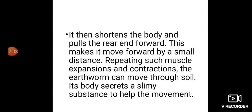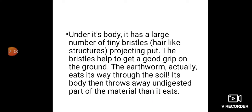Its body secretes a slimy substance to help the movement. Under its body, it has a large number of tiny bristles — hair-like structures projecting out. The bristles are connected with muscles and help get a good grip on the ground. The earthworm actually eats its way through the soil, and its body throws away the undigested part of the material it eats. This activity of an earthworm makes the soil more useful for plants.